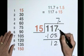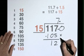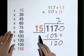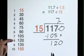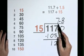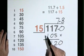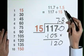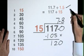Put a decimal point. Carry down a 0. 15 goes into 120, 8 times. 7.8. 11.7 divided by 1.5 is 7.8.